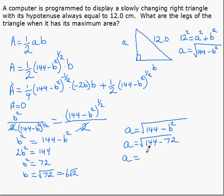which is, as we see right here, 6 root 2. So the maximum area comes from having A equal to 6 root 2 and B equal to 6 root 2.